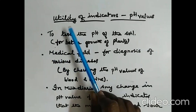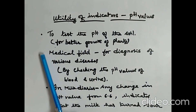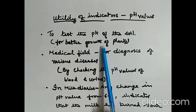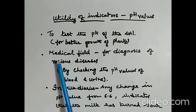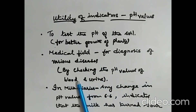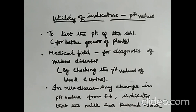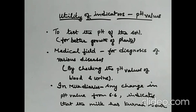The utility of indicators — pH values — is used in agricultural industries to test the pH of soil for better plant growth. In the medical field, it is used for diagnosis of various diseases by checking the pH of blood and urine. In milk dairies, it is used to check the pH; a change from 6.6 indicates the milk has turned. With this, we have completed bases and indicators. In the next video, we will start with salts.